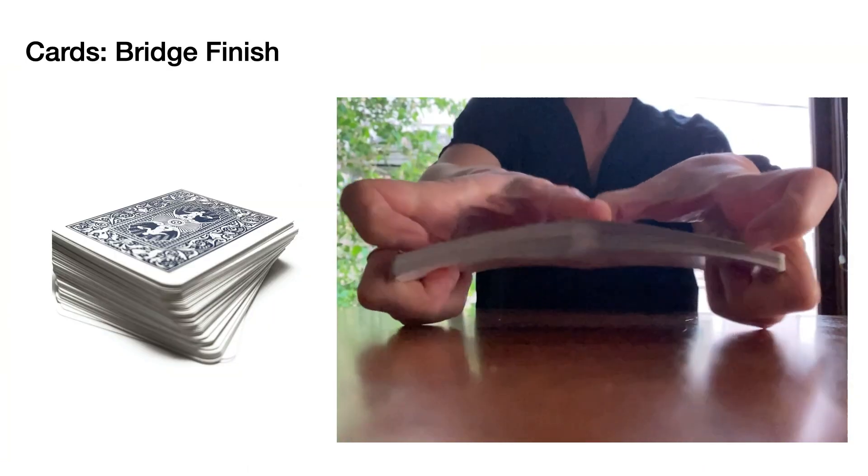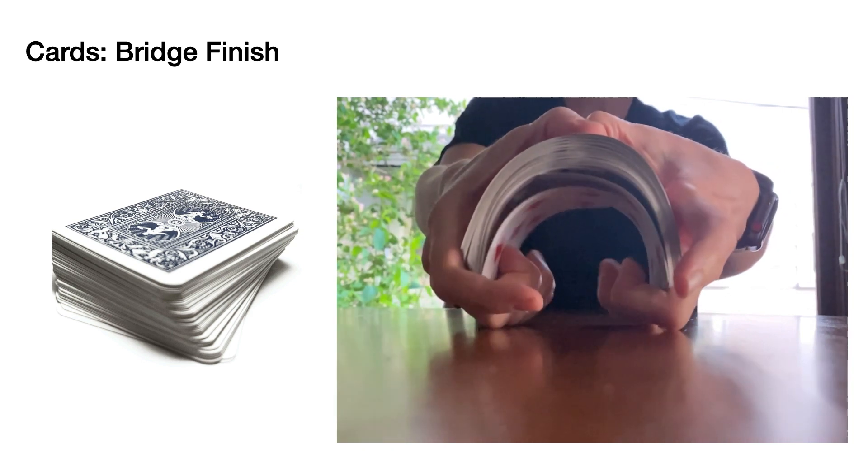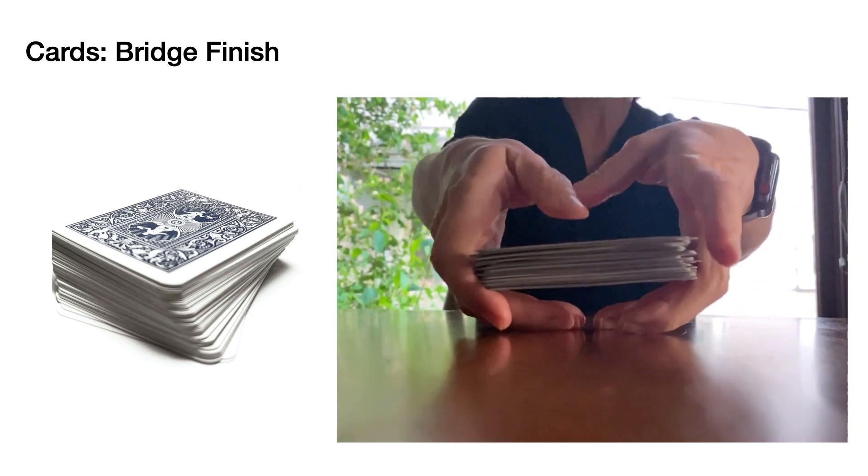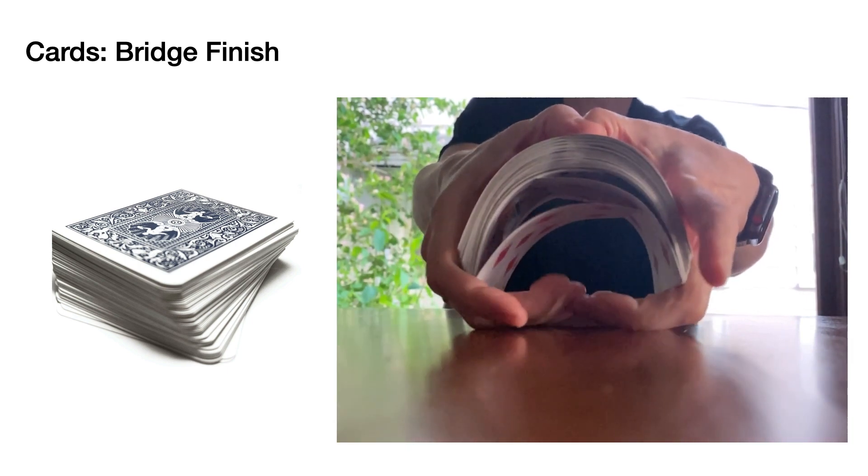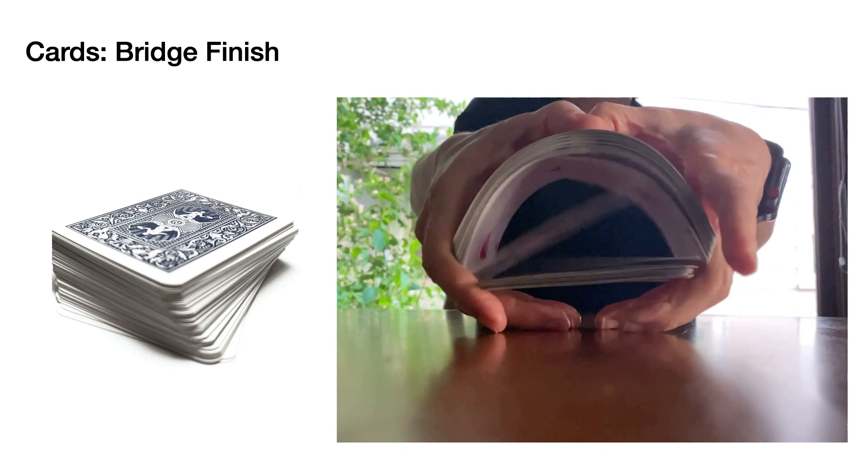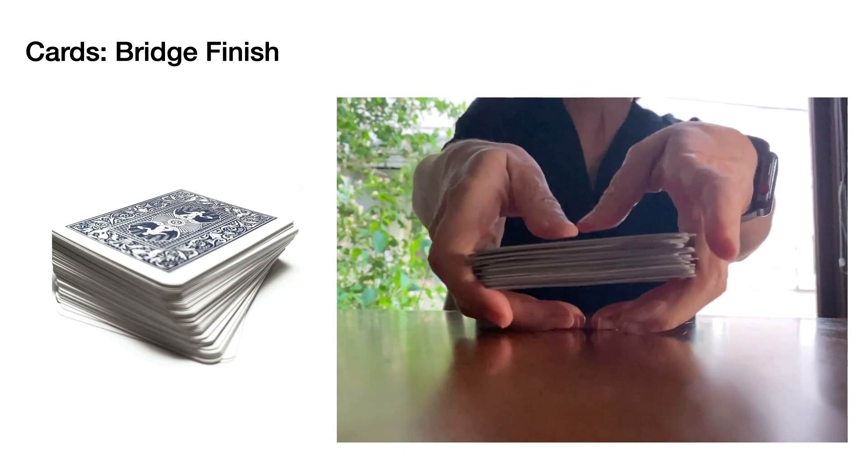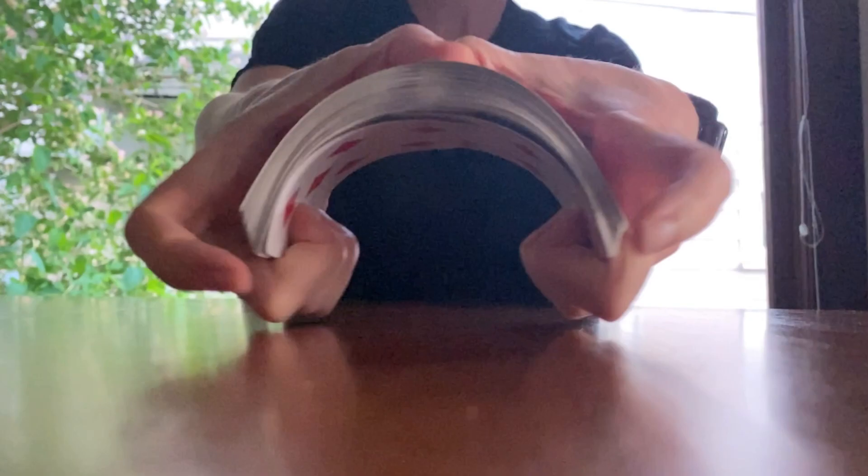So let's return back to cards. A riffle shuffle ending in a bridge finish like this one exercises many of the challenges that we've been looking at. Cards need to remain intersection-free and preserve tiny thicknesses even as they interleave and resolve stiff shell energies.